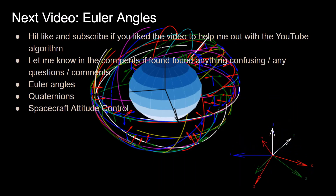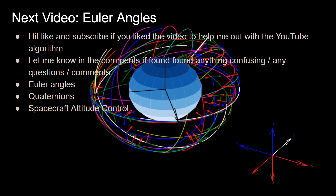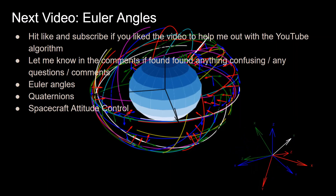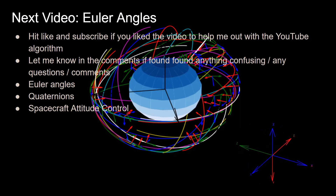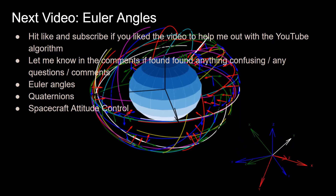That's it for this video. Be sure to hit like and subscribe, and comment to help with the YouTube algorithm. Let me know if anything was confusing or if you have questions. In the next video, I'll be starting into Euler angles — going more into these rotations and how to describe a body or reference frame with respect to another, which can also be done with quaternions. These are all prerequisites for the Spacecraft Attitude Control series.